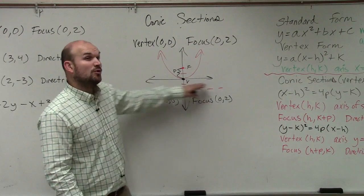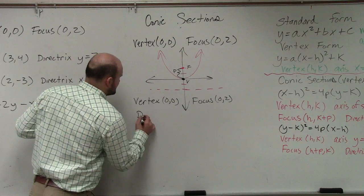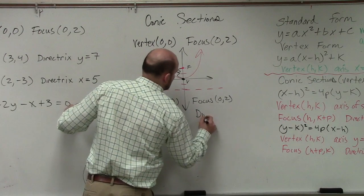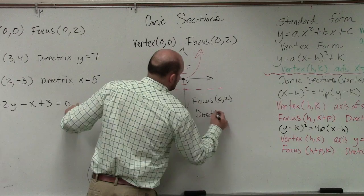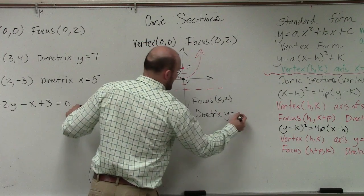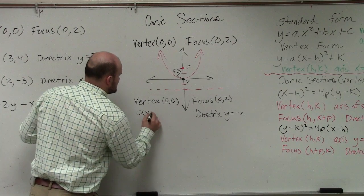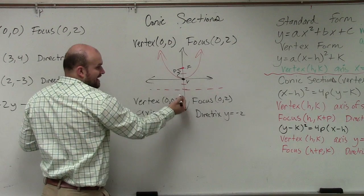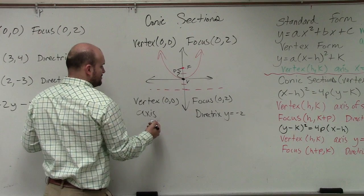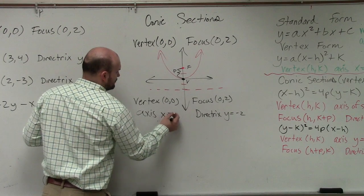Please remember, though, this is a horizontal line. So your directrix is going to be y equals negative 2. Whereas the other thing I asked you to find is the axis of symmetry is going to be on my y-axis. So therefore, it would be x equals 0.